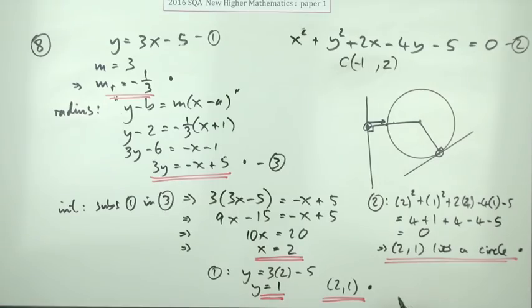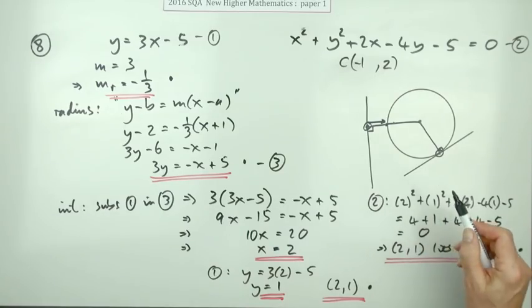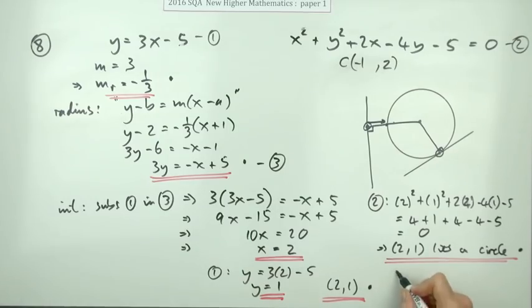And then the last mark is for saying, well, that means the line's a tangent. Now they've just given the mark for saying the line's a tangent, but the line's a tangent because the line is perpendicular to the radius at the point 2, 1 in the circle. I'll just put down what they've got. That means line is a tangent to the circle. I don't think that should be sufficient. That's all they've got though.